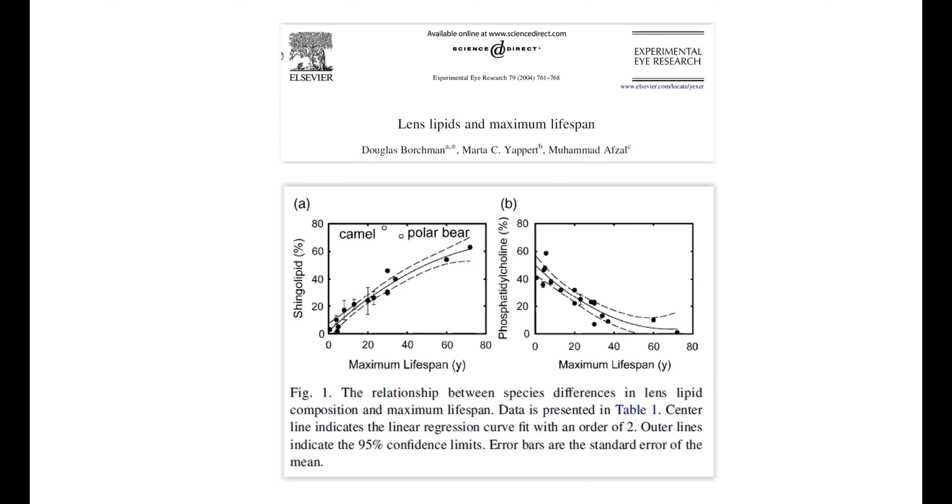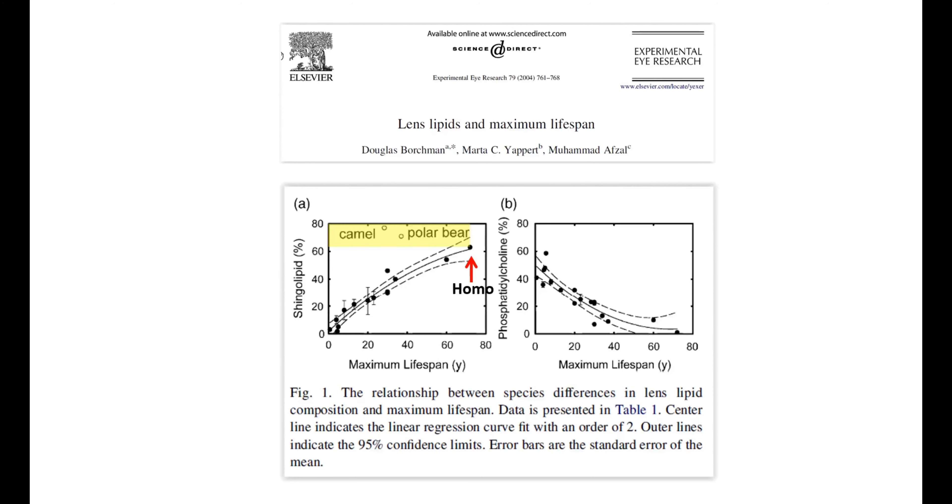Finally, here's a study showing a positive correlation between abundance of sphingolipids and mammalian lifespan. Compared to phosphatidylcholines, sphingolipids have high resistance to oxidation, which is thought to contribute to extended longevity. In the studied group, there are two outstanding outliers — camel and polar bear — who have dramatically high content of sphingolipids, and thus they may hold a key to maintaining a favorable balance of lipids.